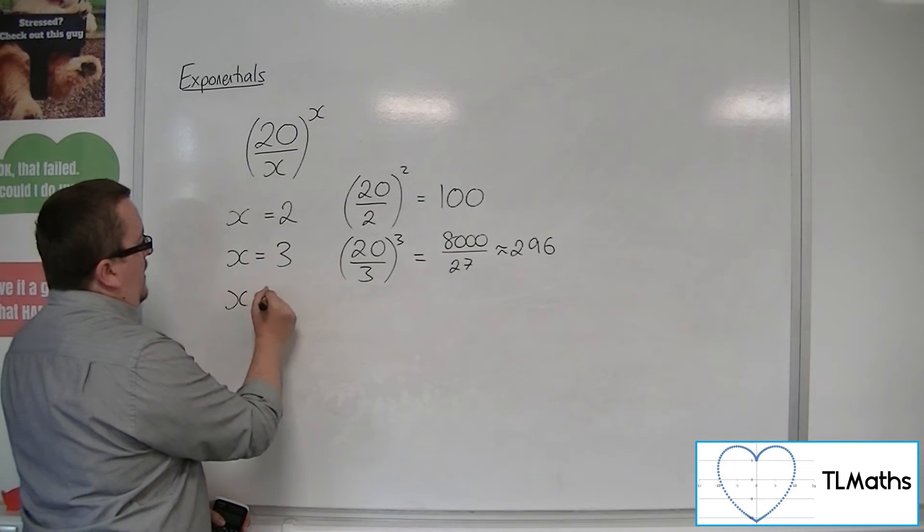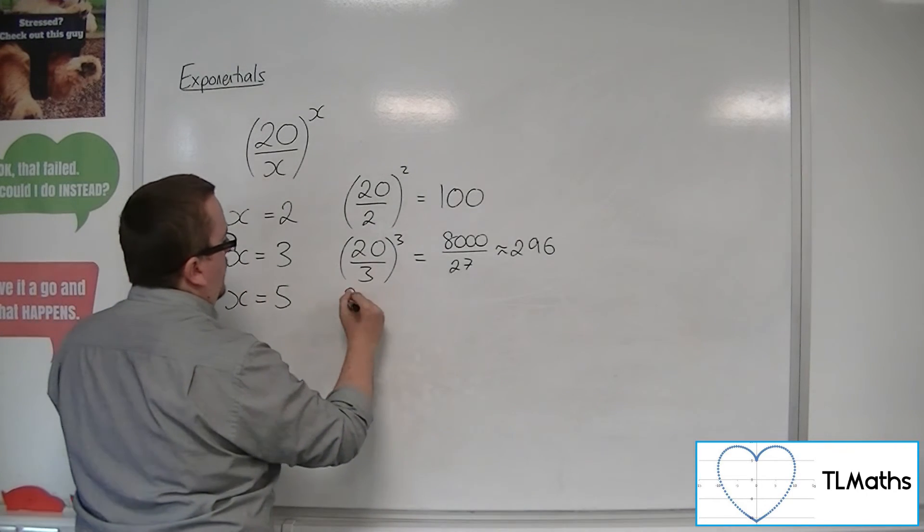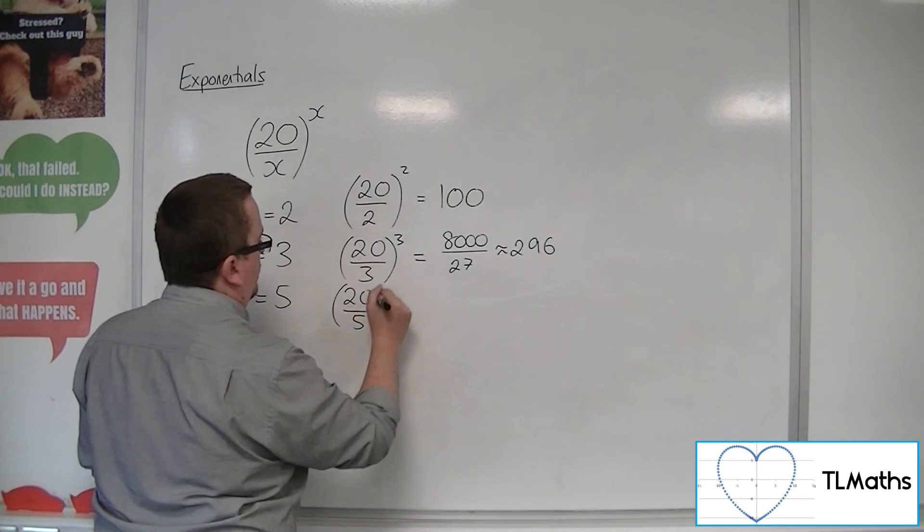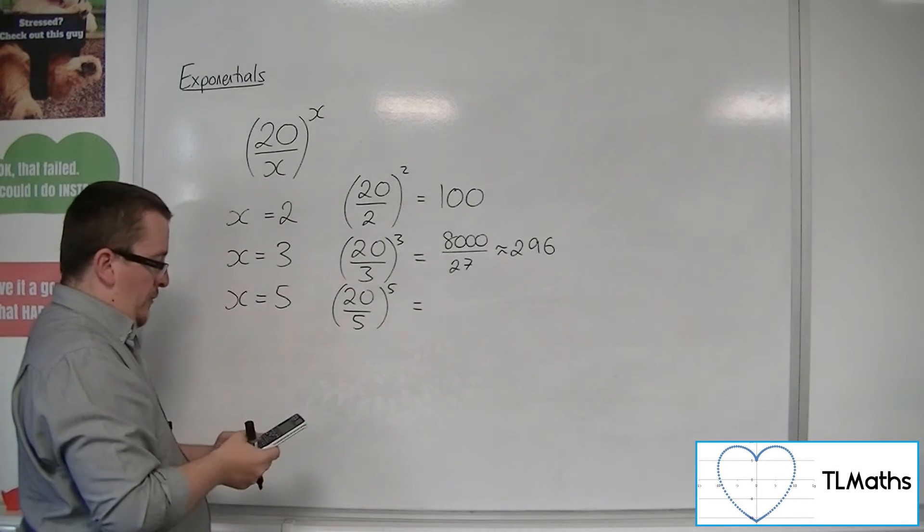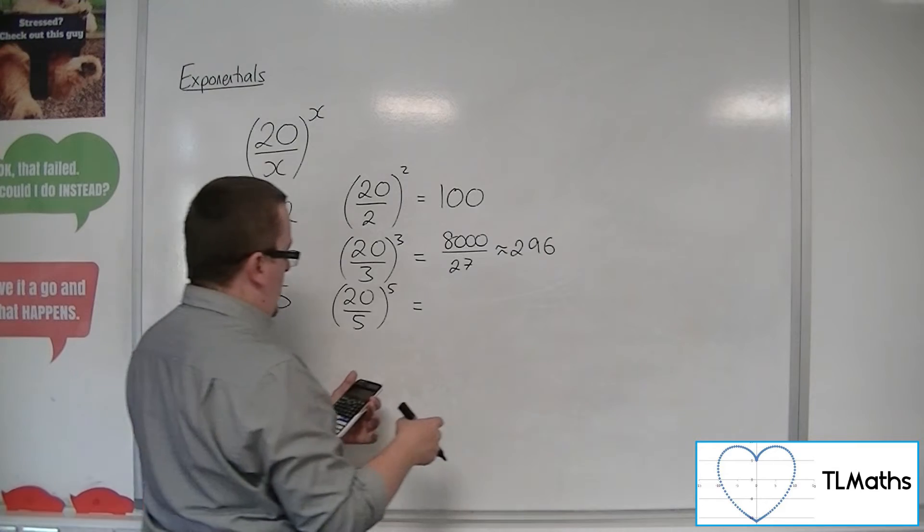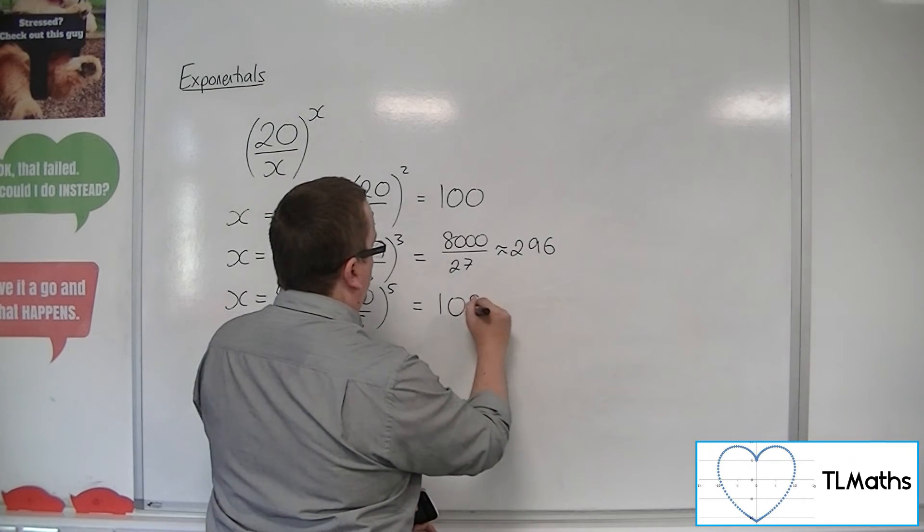So how about when x is, let's say, 5? So 20 over 5 to the 5. So that would be 4 to the power of 5, which is 1024.